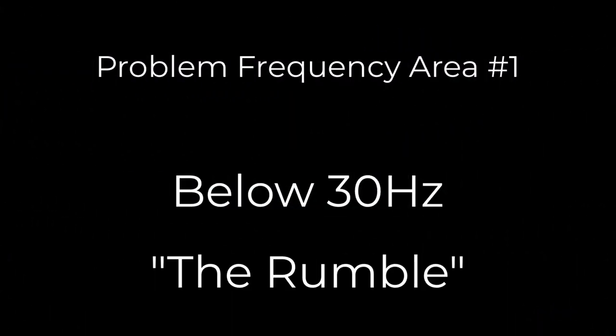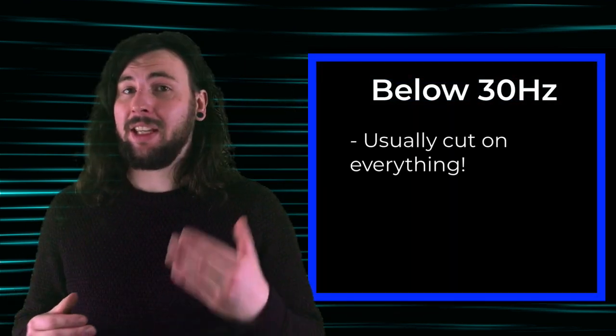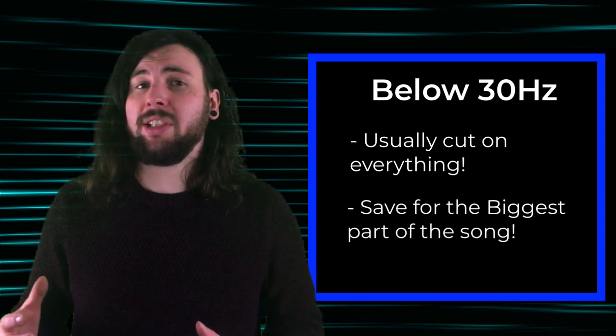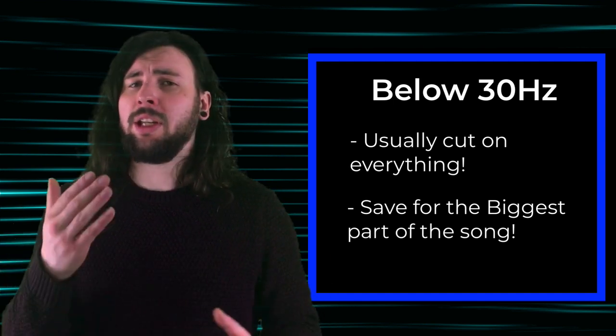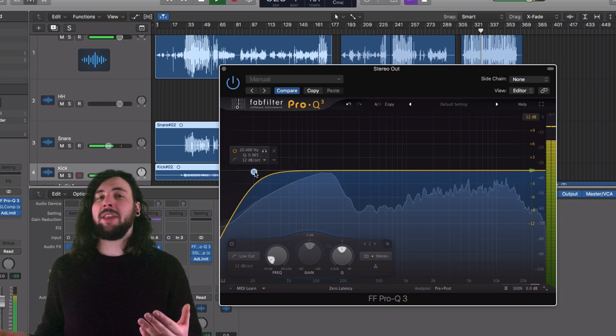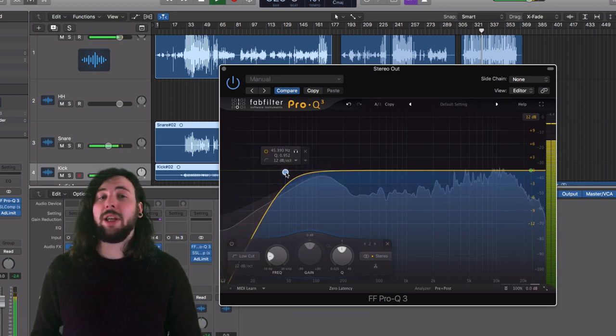Number one: sub 30Hz — the rumble. We can hear below 30 Hertz but much of that energy and speaker real estate is wasted noise and rumble that doesn't really contribute to the mix. This range is usually cut on everything, even the kick and bass. The 20 to 30 Hertz range may be present in EDM drops and choruses to momentarily extend the low end, and you can increase the impact of that low end by trimming the fat below 30 Hertz in the previous section, which will usually tighten up the bottom end.